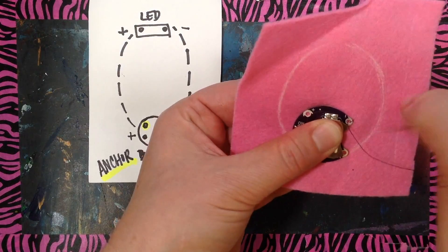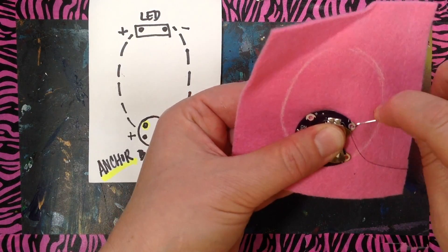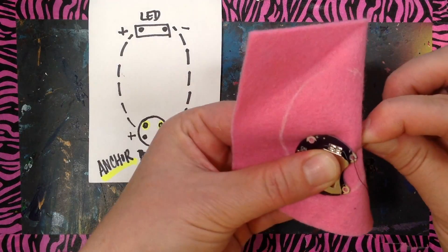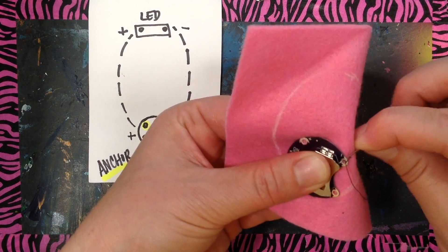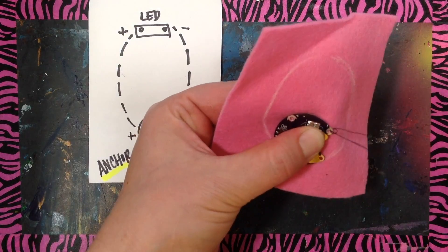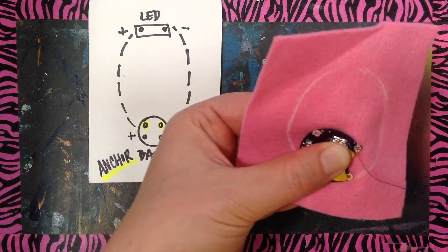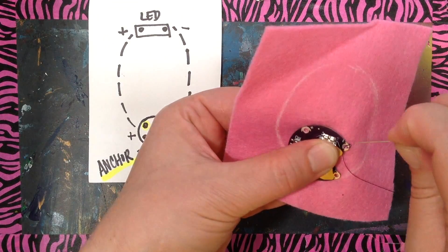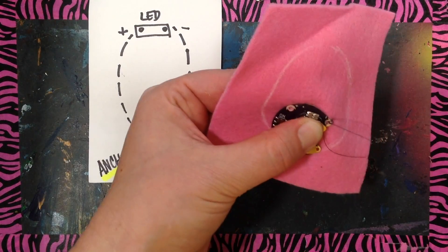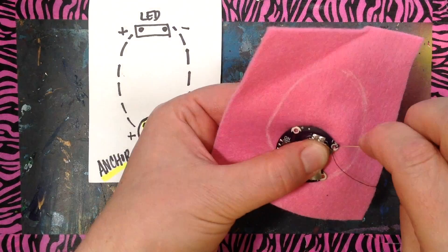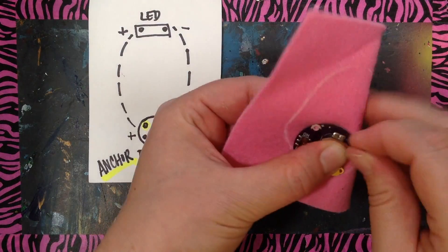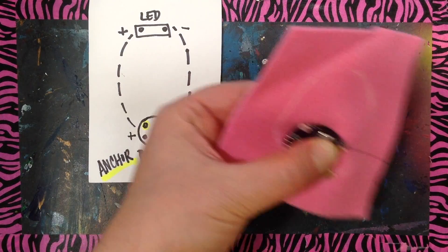So you can see I'm actually wrapping the string around the metal, bending the fabric to bring it up into that hole. I would recommend doing this at least five times. So you have a nice good anchor and it's not sliding around.